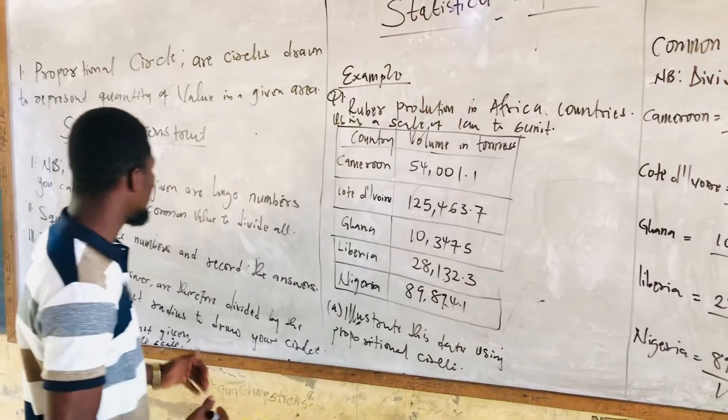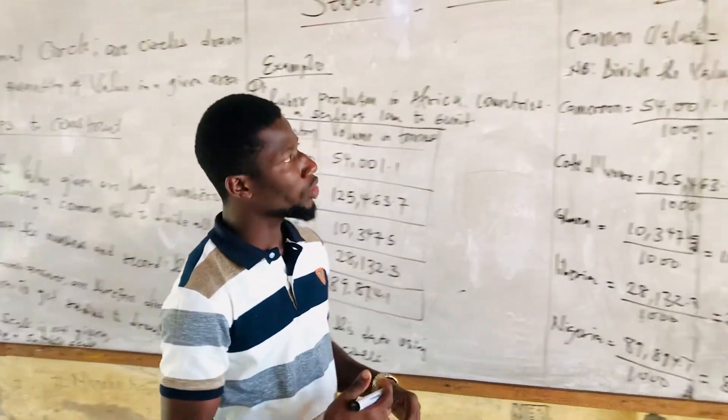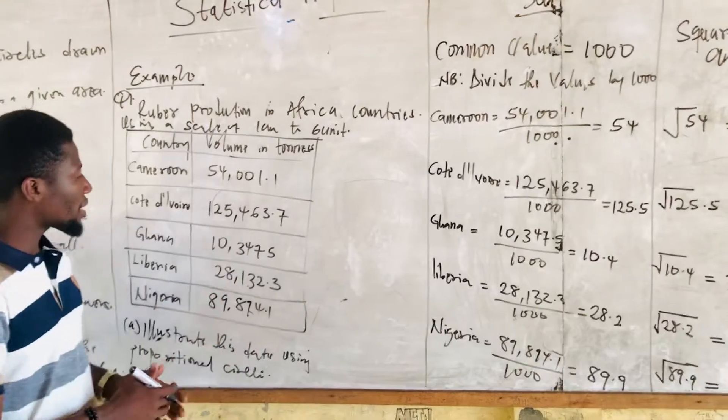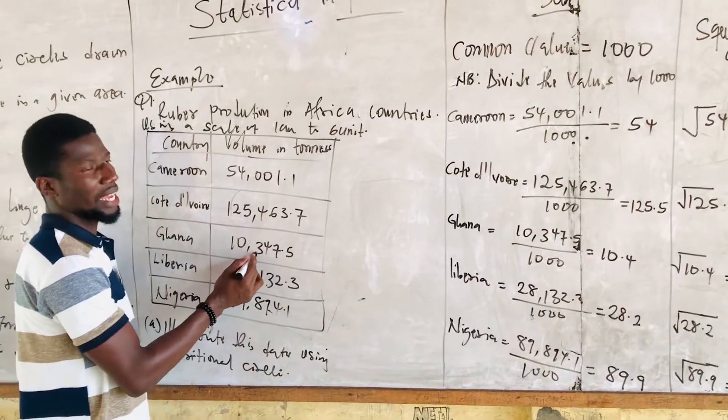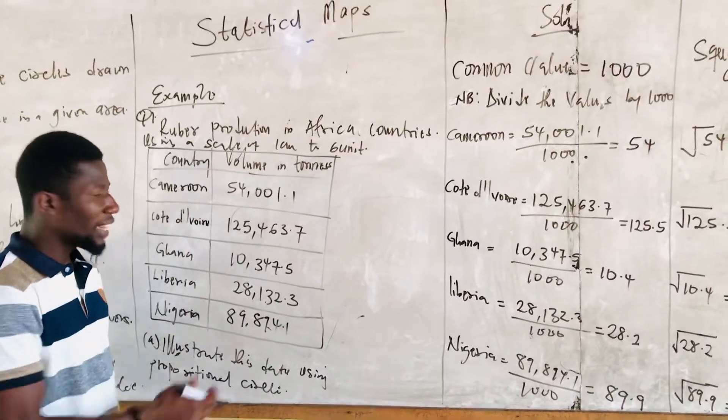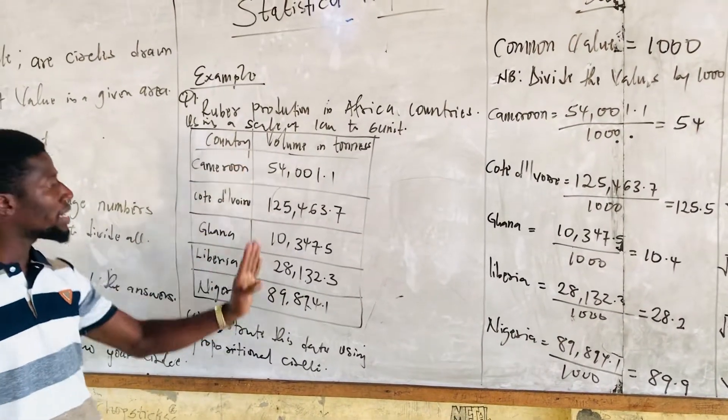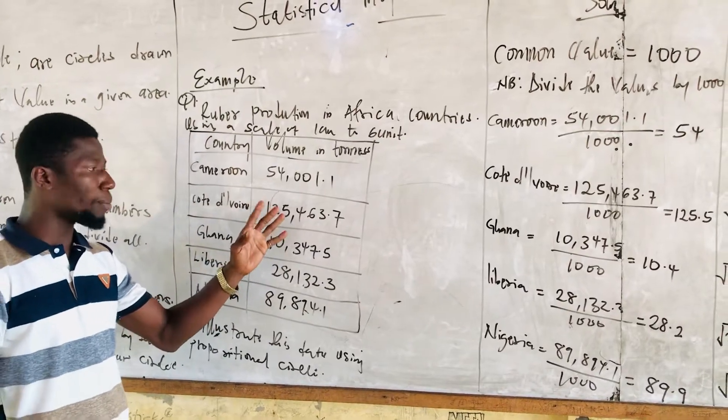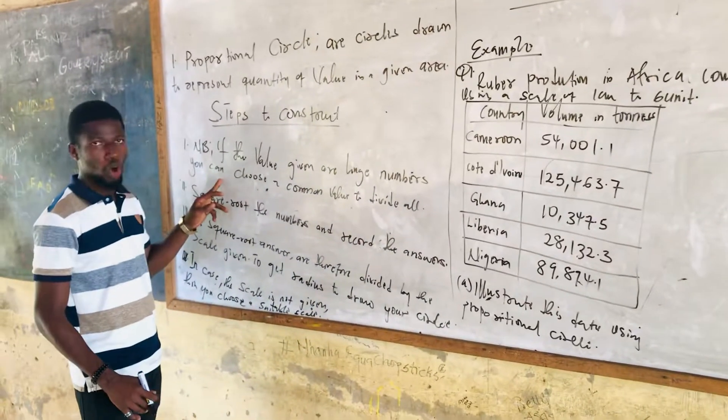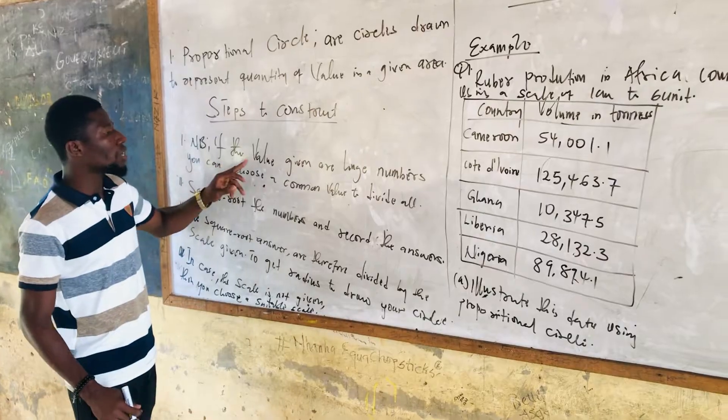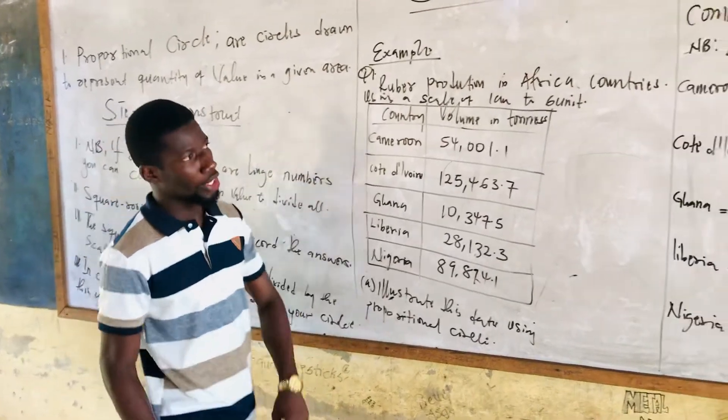The question goes: illustrate this data using a proportional circle. We are going to use our four steps here to execute or to answer the question. Looking at the table, we can see that the least value here is 10,347.5 tons. All these numbers here are huge numbers, so the best one to work out this is to apply step one. That is, if the values given are huge numbers, you can choose a common value to divide all.